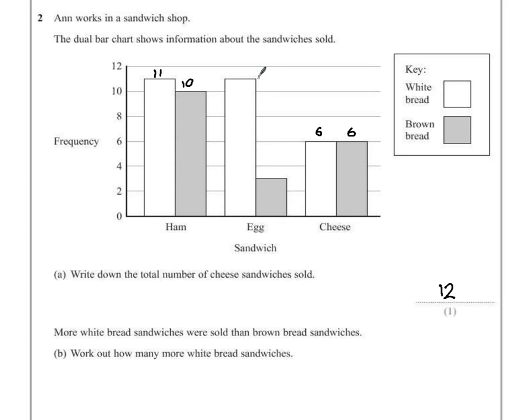For egg, same idea. Between 10 and 12 means there were 11 sandwiches sold. And the brown bar lies between 2 and 4, which means 3 sandwiches were sold.